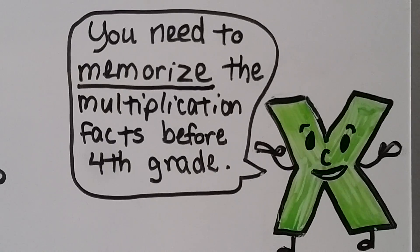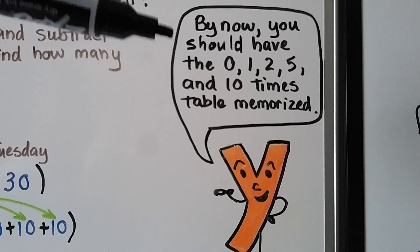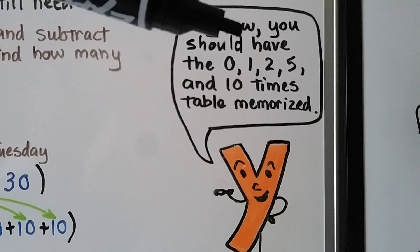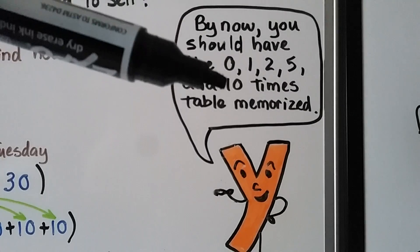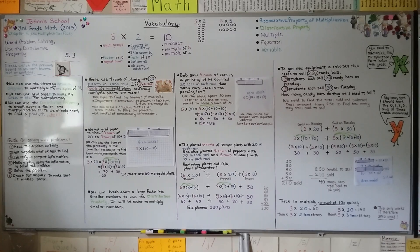I've said several times throughout this playlist: you need to memorize the multiplication facts before 4th grade. We're in chapter 5 now, so by this point you should have the 0, 1, 2, 5, and 10 times tables memorized — up to 10 on each one, including 10 times 10. If you haven't, start working on that now. Within the next couple of chapters you'll need more memorized. Knowing multiplication facts means you know them as quickly as you know that 1 plus 1 equals 2.